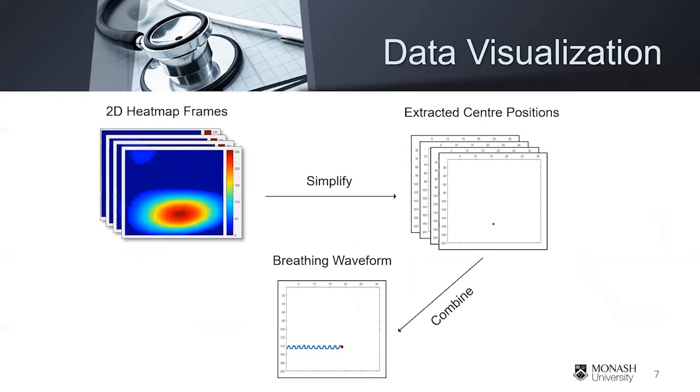Meanwhile, a continuous breathing waveform can be also obtained from the 2D heatmap. For each frame of the heatmap, we will observe the extracted center position, and then by combining all the extracted positions into a single plot, the breathing waveform can be observed.